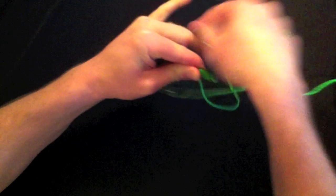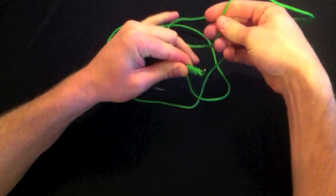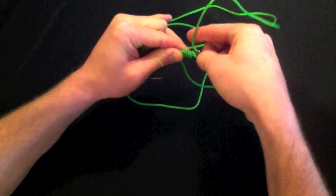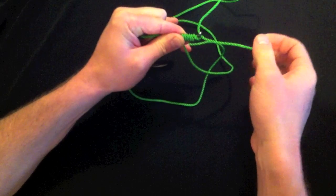We're going to take the opposite end of the line and feed it through the opposite way that you fed it through the first time. So now you got a little bit of line sticking out here.